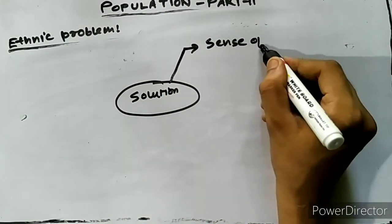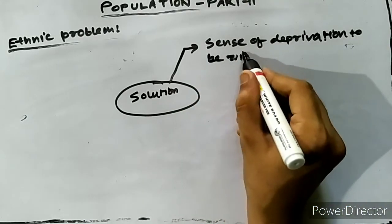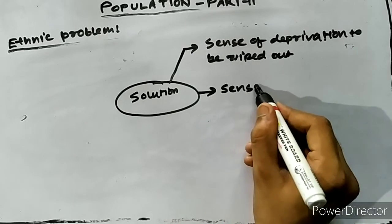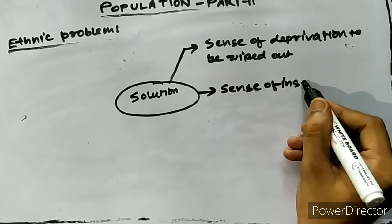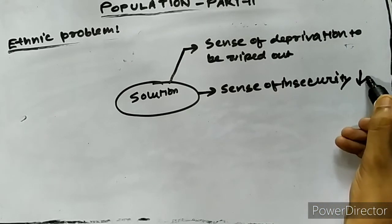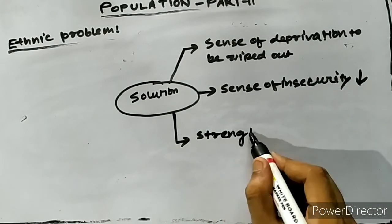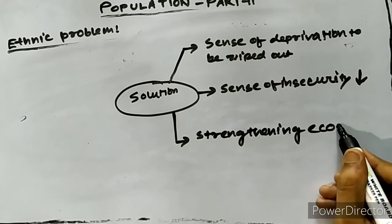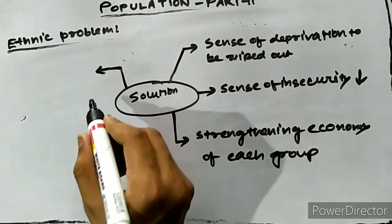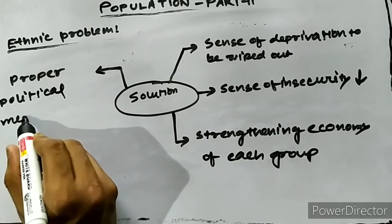Firstly, the sense of deprivation and exploitation at all levels has to be wiped out. The sense of insecurity and fear of indigenous culture being swamped has to be contained by making efforts to contain immigration, identifying illegal migrants, and deportation. The government has to take steps to strengthen the economy of each group. Lastly, a proper political mechanism is needed to empower the ethnic groups so that they can manage their own affairs.